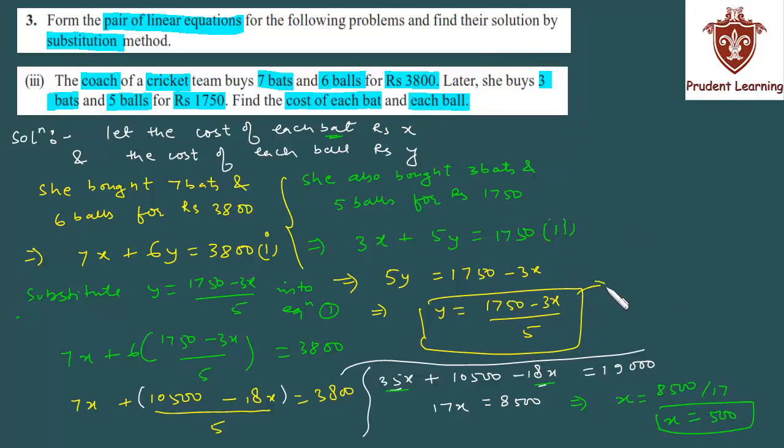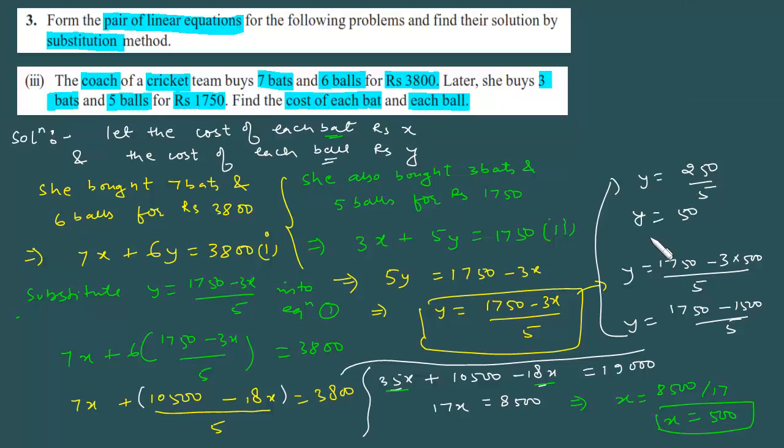Now you will put x's value. y equals 1750 minus 3 times x, which is 500, all upon 5. So y equals 1750 minus 1500, which is 250 over 5. This gives us 50. So finally, cost of each ball is Rs. 50.